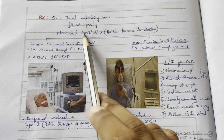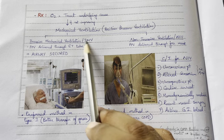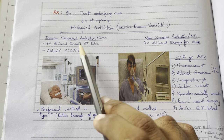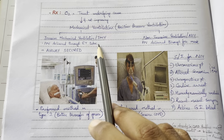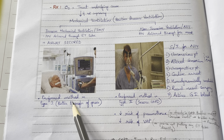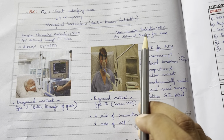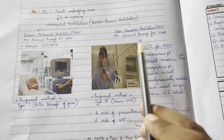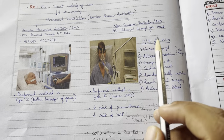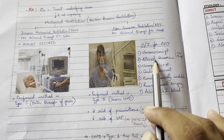If not improving, give mechanical ventilation — either invasive (IMV) via ET tube or non-invasive (NIV) via face mask. IMV is preferred in type 1 respiratory failure as the airway is secured. NIV is preferred in type 2 respiratory failure.